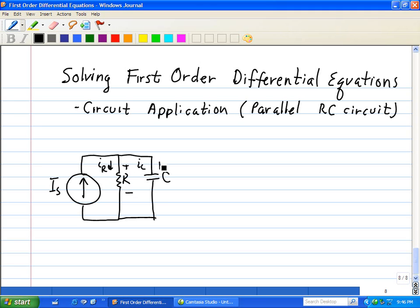So we're going to apply KCL, where the sum of the incoming currents is the sum of the outgoing currents. Our incoming current is I sub s, and our outgoing current is the sum of IR plus IC.